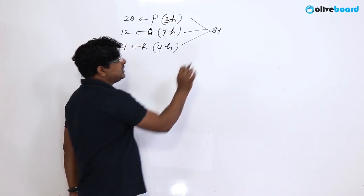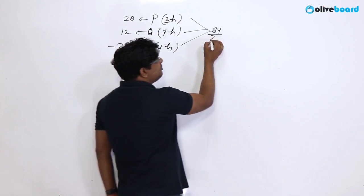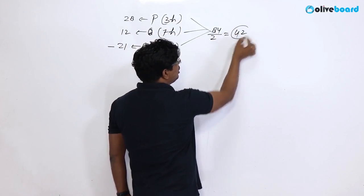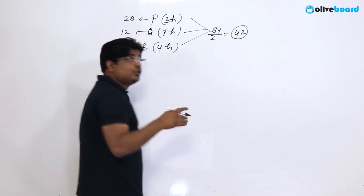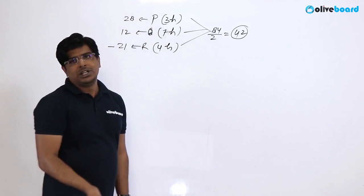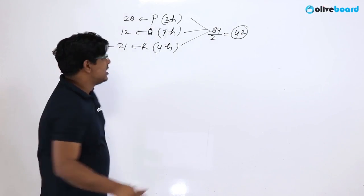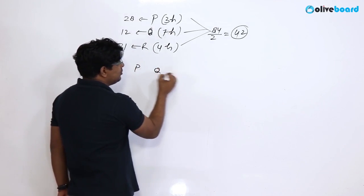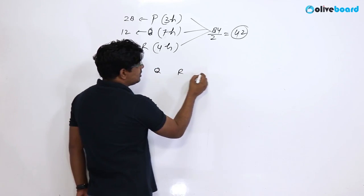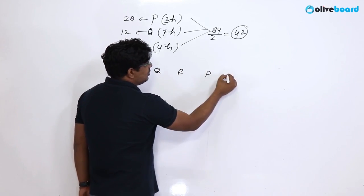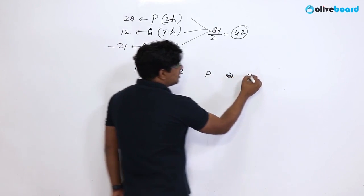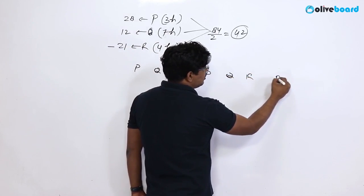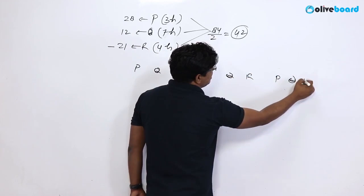The question of the day is that it is a half fill. So, half fill is 42 fill. It is 42 fill. Now, the alternatives are P, Q, R. Alternate R, P, Q, R. This way.